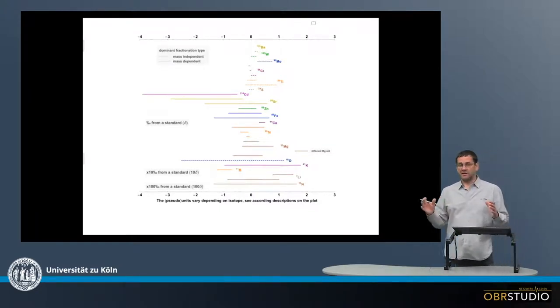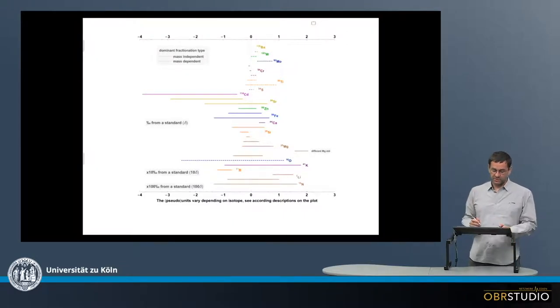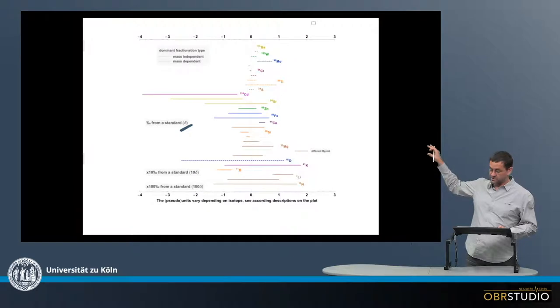This is because the ranges are so different, and if we would plot this all with the same range, then some of the ranges would be very small. So up here in these three sectors in the upper sector, this is the real delta notation.